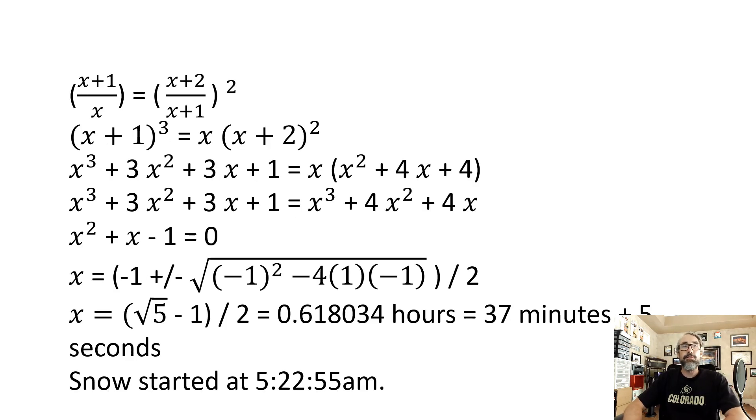So here it's just a matter of doing the algebra. We are at x plus one over x is equal to x plus two over x plus one squared. Then we cross multiply and get x plus one cubed is equal to x times x plus two squared. And here it's just simple algebra that will bring us to x squared plus x minus one equals zero. Then use the quadratic formula and we get x is equal to the square root of five minus one divided by two which works out to about 0.618034 hours or 37 minutes and 5 seconds. That's how much time it took the snowplow driver to get ready. Therefore it started snowing at 5:22:55. So there's your answer.